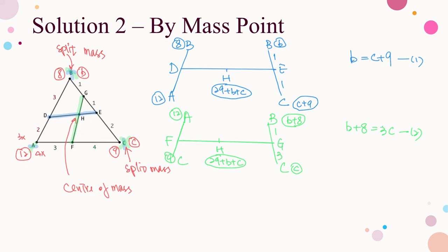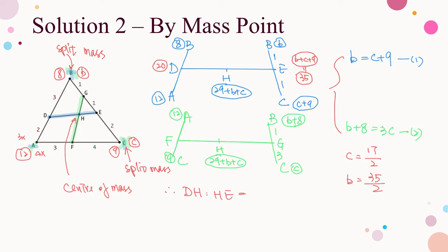Solving equations 1 and 2, we have c equals 17/2 and b equals 35/2. For line DE, the mass of D is 20 and the mass of E is 35. Thus DH to HE is 35 to 20, that is 7 to 4. Similarly, for line FG, the mass of F equals 21 and the mass of G is 34. Thus FH to HG is 34 to 21. The answers are the same as those in solution 1.